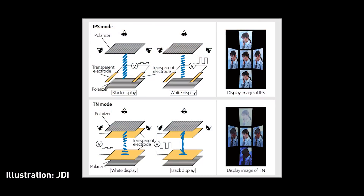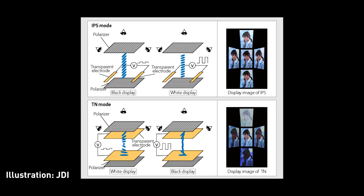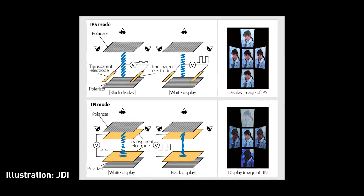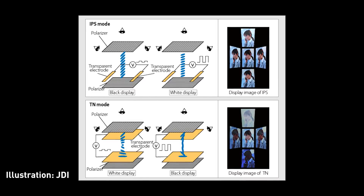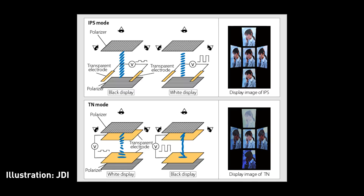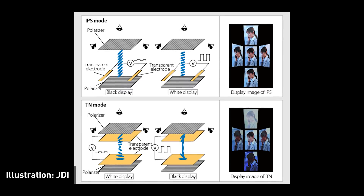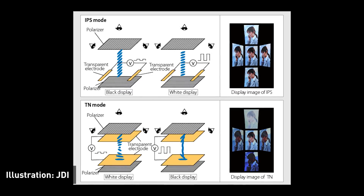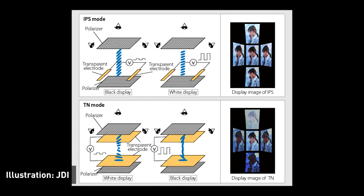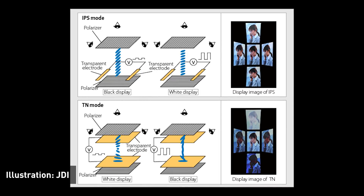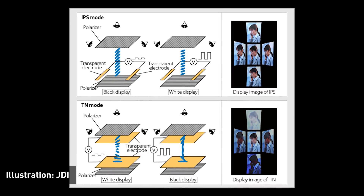IPS stands for in-plane switching and, like all LCDs, uses voltage to control the alignment of liquid crystals. However, unlike TN LCDs, IPS LCDs use a different crystal orientation where the crystals are parallel to the glass substrates — hence the term in-plane. Rather than twisting the crystals to modify the amount of light let through, IPS crystals are essentially rotated, which has a range of benefits.